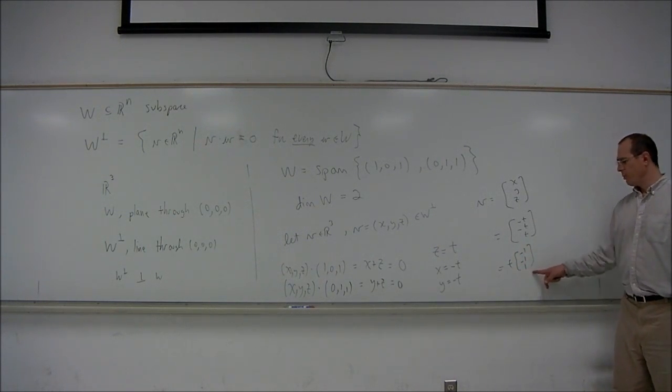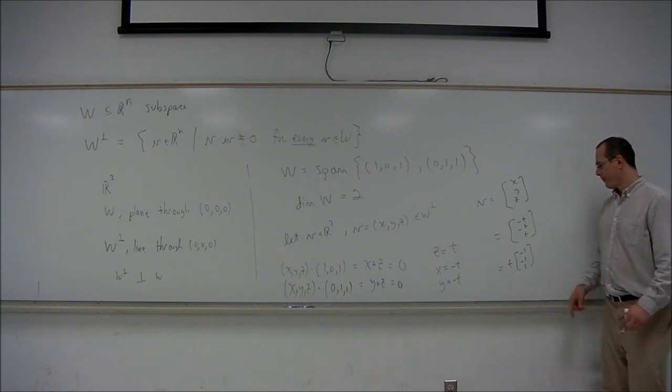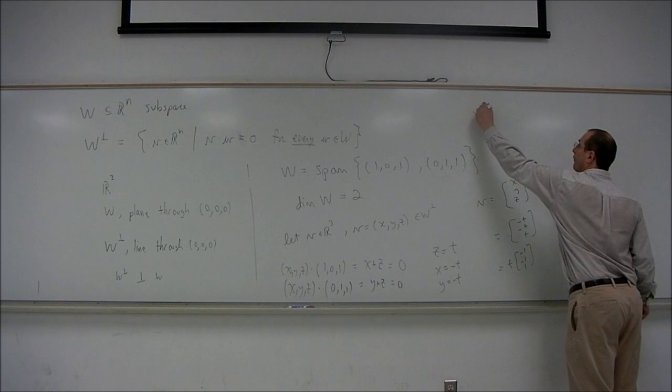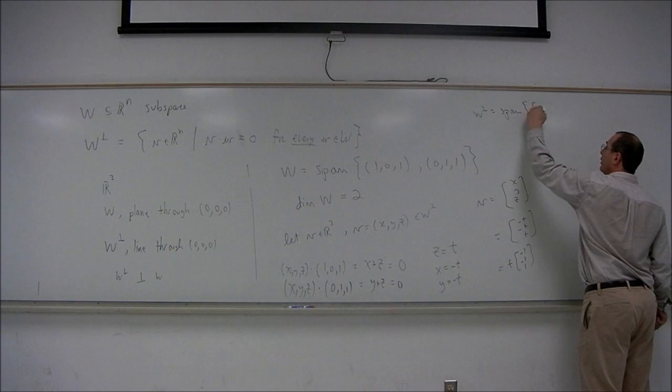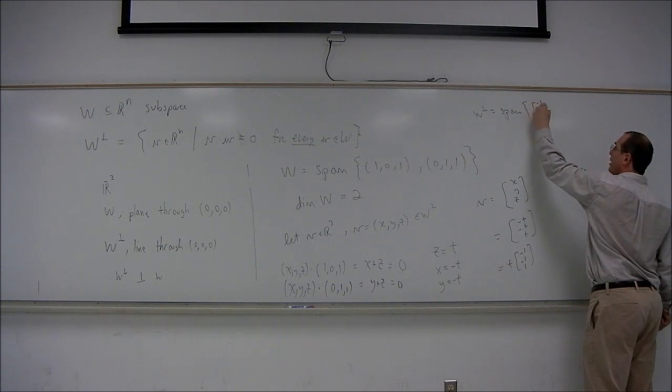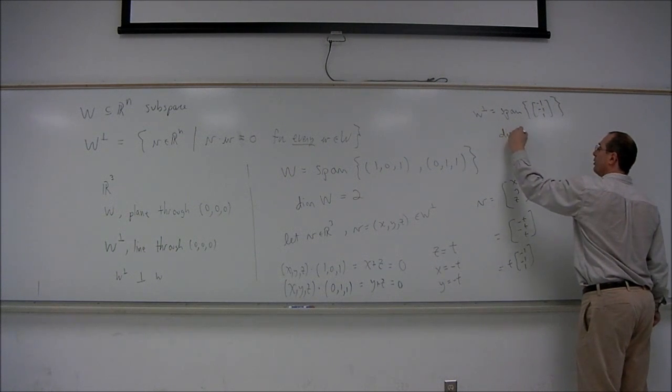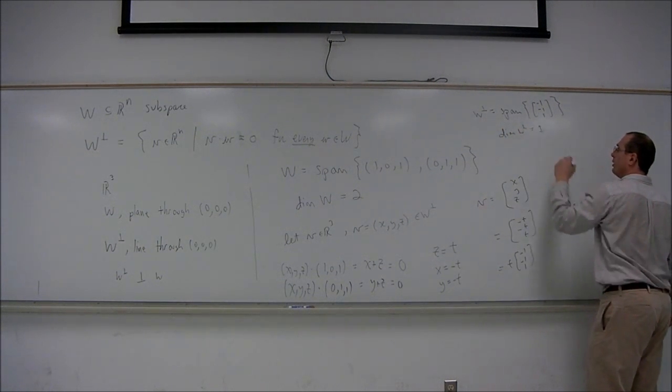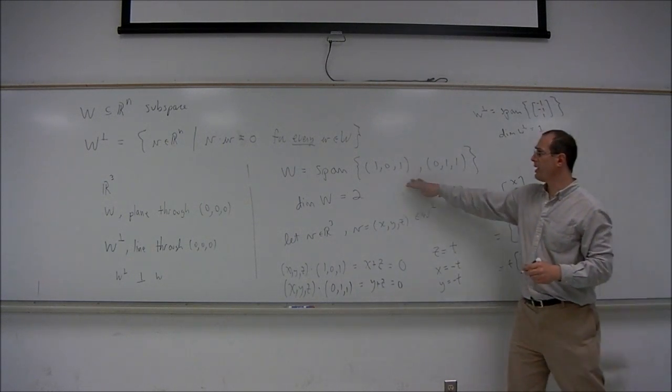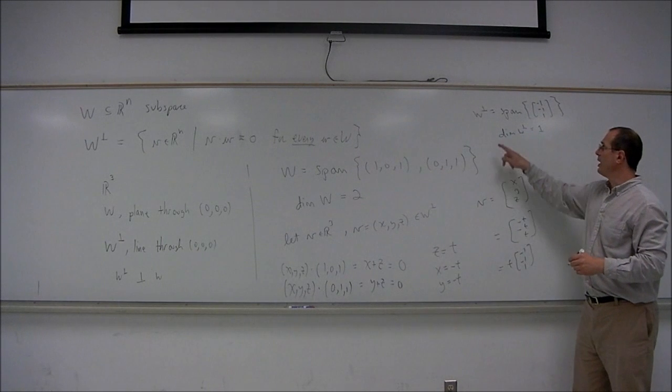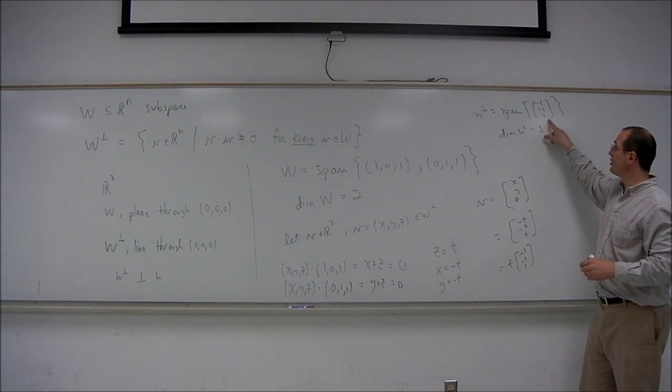So W perp will be a one-dimensional space. It will be the span of this vector. W perp is the span of the vector (−1, −1, 1), and the dimension of W perp will be 1. It will be a line through the origin. W was a plane—the span of two vectors—and W perp is a line in R^3, the span of one vector.